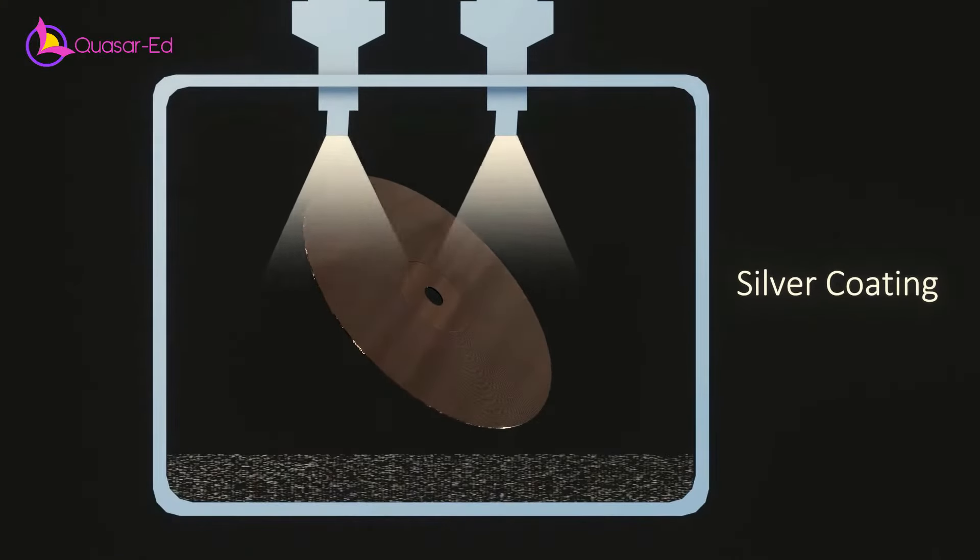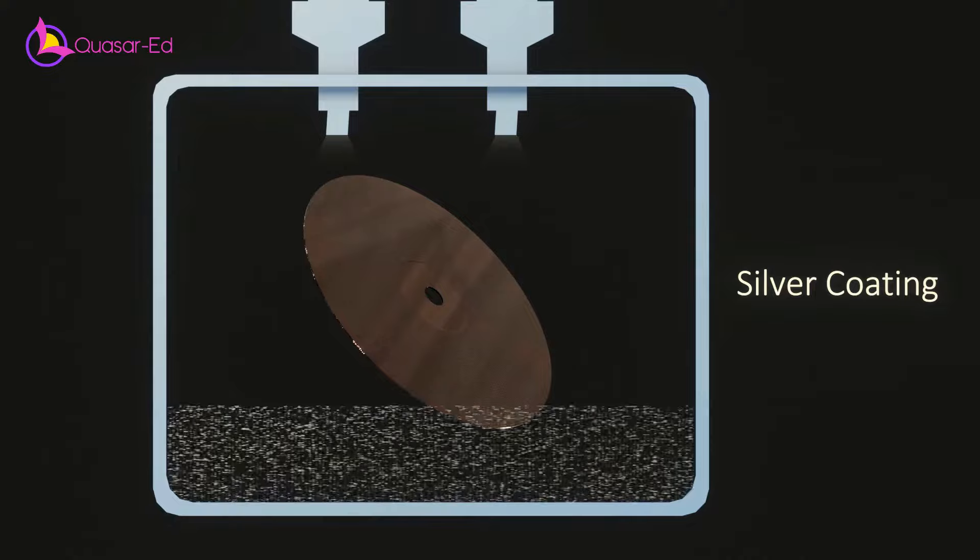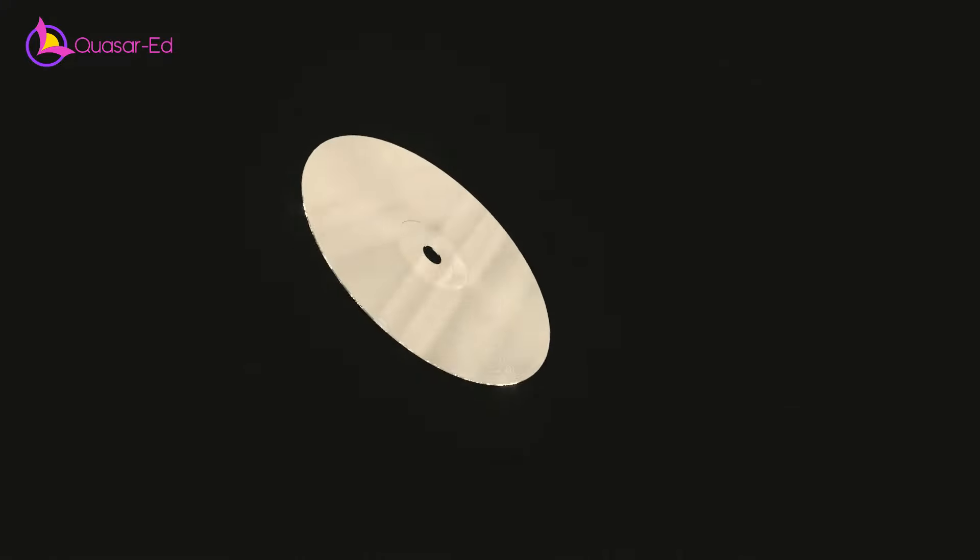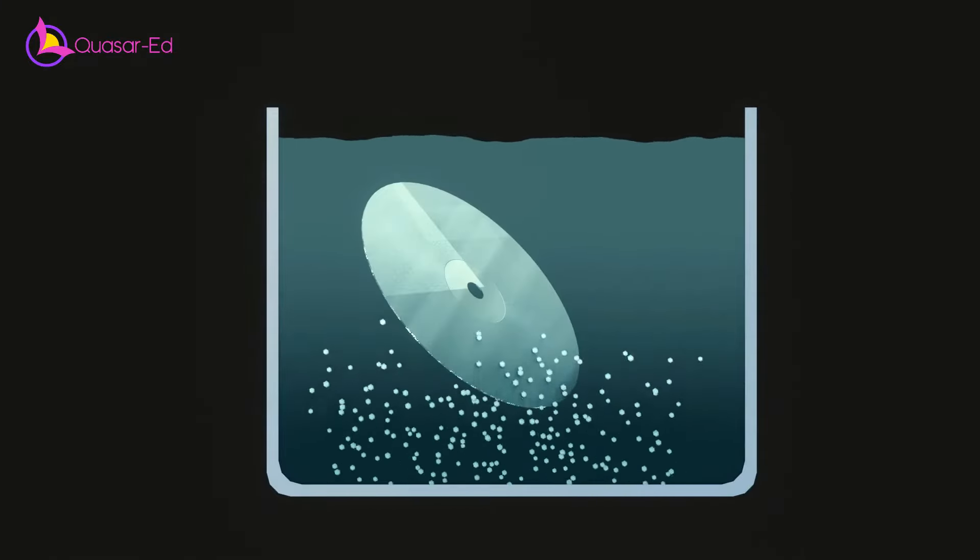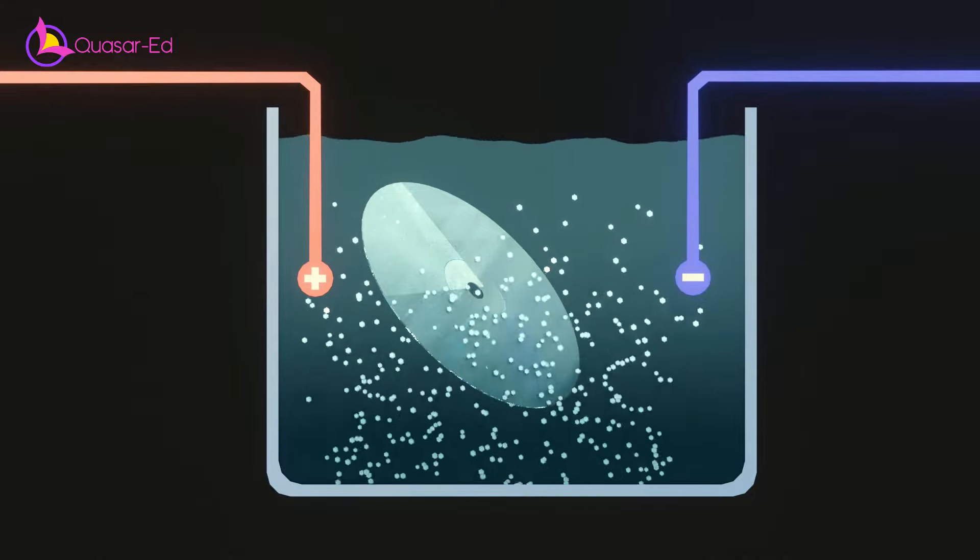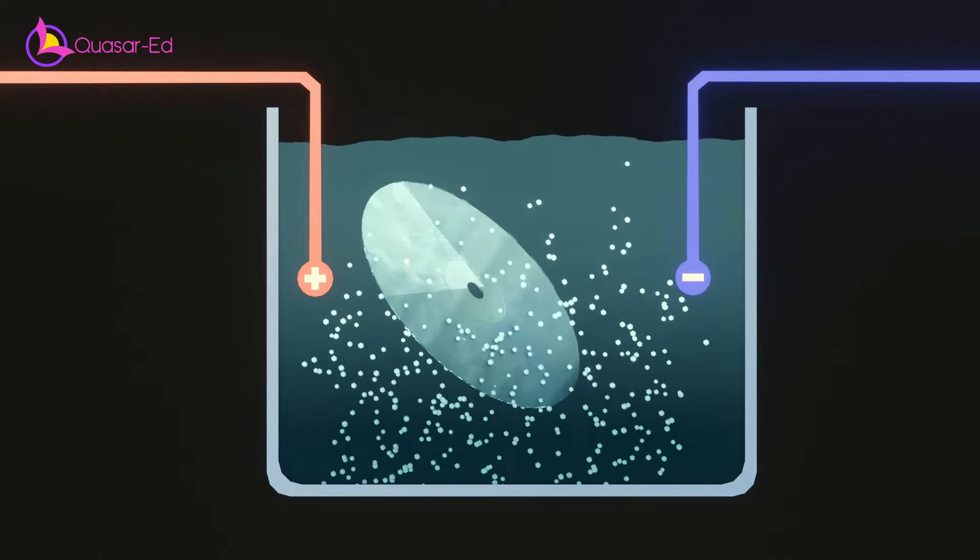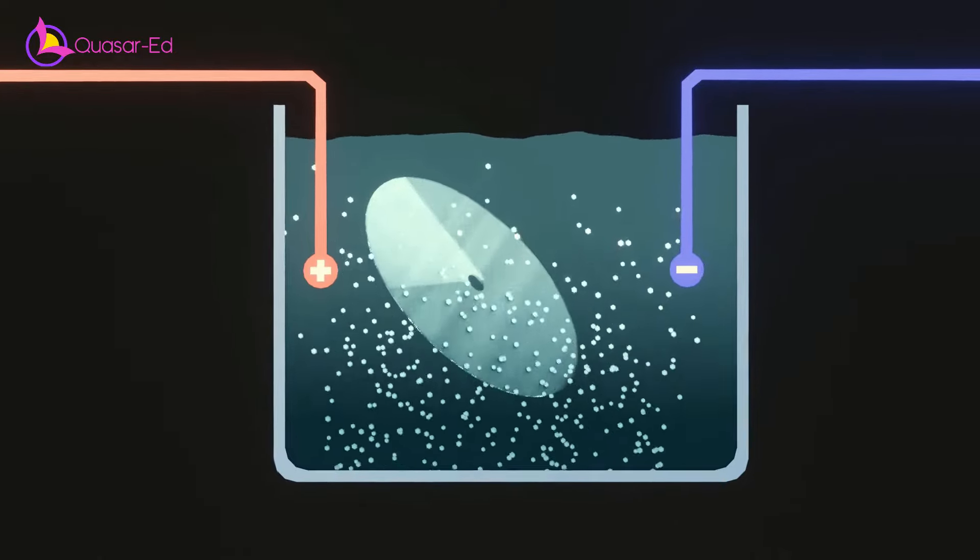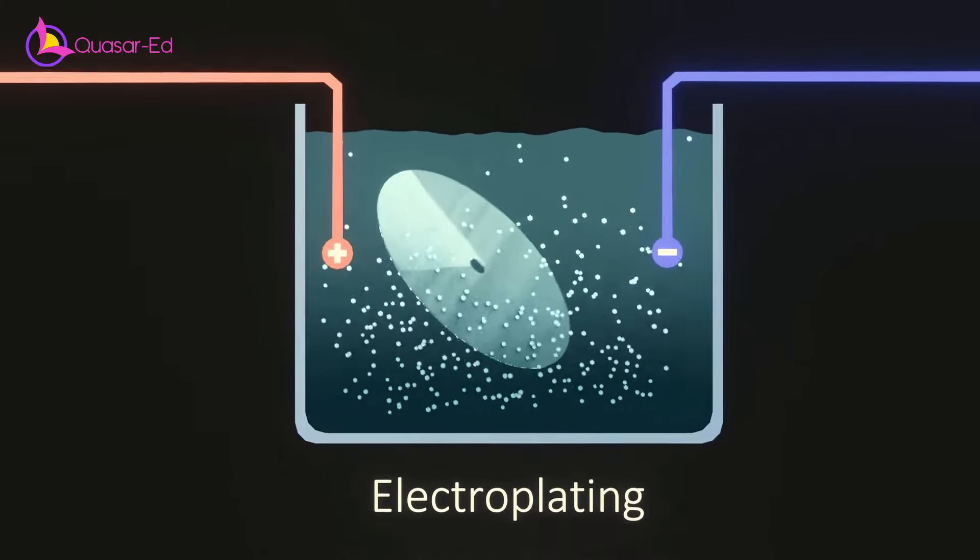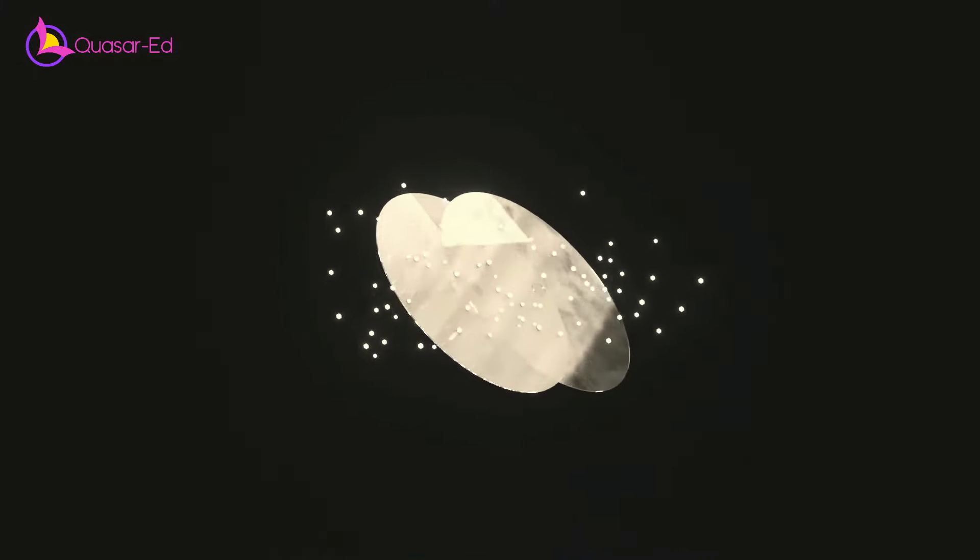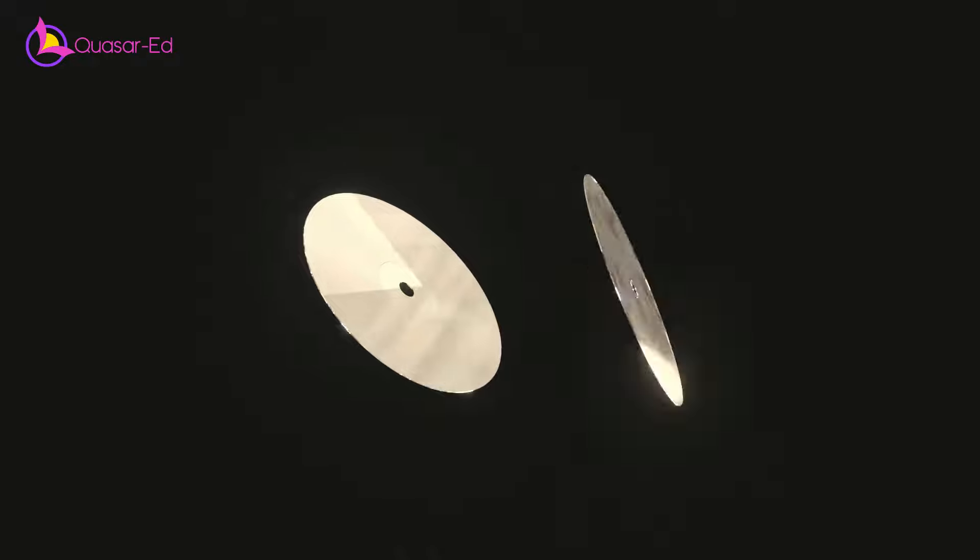First, a master disc is sprayed with silver chloride and coated with silver to conduct electricity. After that, it is immersed into a liquid tank of dissolved nickel. When immersed, the nickel is fused to the silver surface by electrical charge. This process is called electroplating.